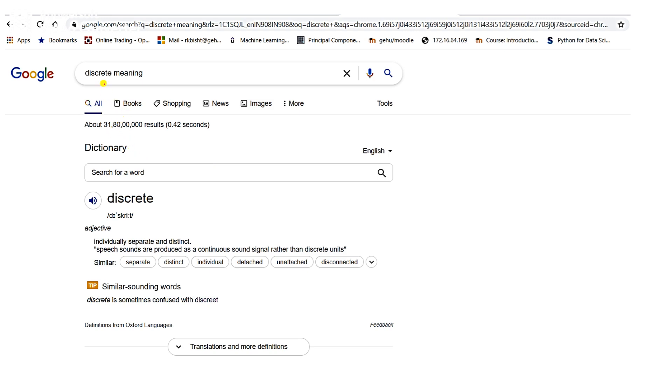Simply go to Google and type discrete meaning, then you will get this answer: individually separate and distinct. It means discrete means we are talking about individually separate and distinct objects.